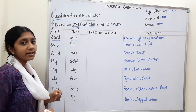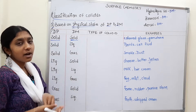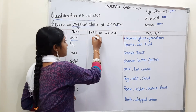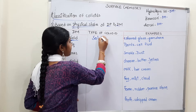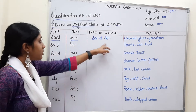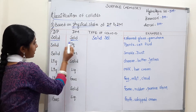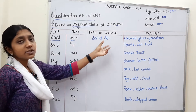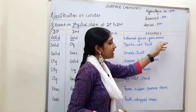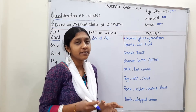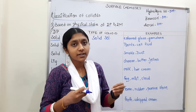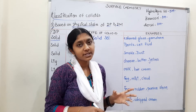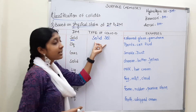First type: the dispersed phase is solid and the dispersion medium is solid. The type of colloid is called Solid Sol.